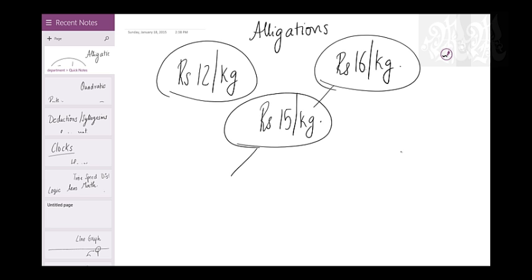And then just subtract. 16 minus 15, 1. 15 minus 12, 3. That's the ratio. That's it. Done. That's what I do. It's a feeling. It's a beautiful thing to do. So whatever you have, subtract and you get the answer. You get the ratio straight. 1 is to 3.